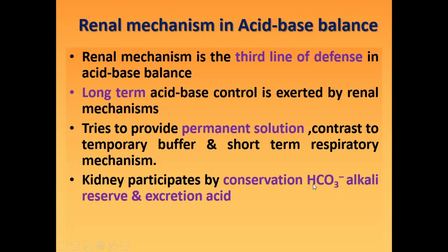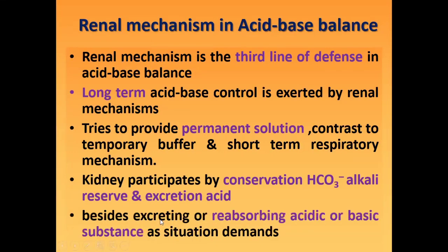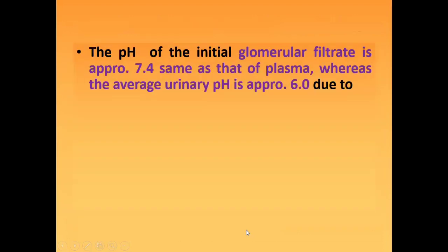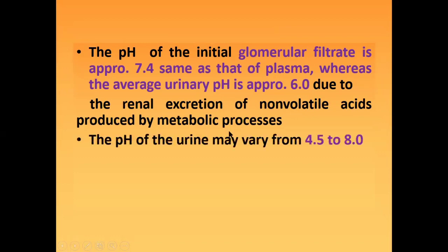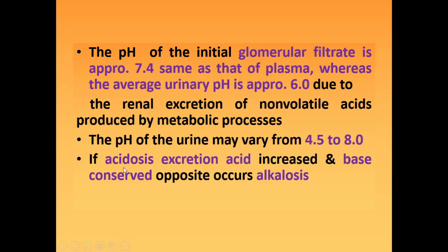The kidney participates by conservation of HCO3 — the alkali reserve — and excretion of acid, besides excreting or reabsorbing acid or basic substances as the situation demands. The pH of the interglomerular filtrate is approximately 7.4, the same as that of plasma, whereas the average urinary pH is approximately 6 due to renal excretion of non-volatile acids produced by metabolic processes. The pH of urine can vary from 4.5 to 8 depending on whether there is acidosis or alkalosis: in acidosis, excretion of acid increases and bases are conserved, while the opposite occurs in alkalosis.